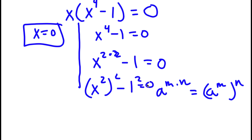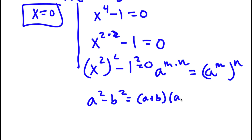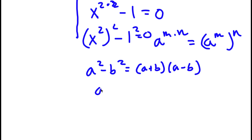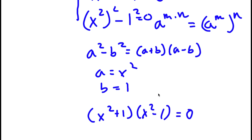Now, if I have something in the form a squared minus b squared, this is equal to a plus b times a minus b. So in this case, with x squared to the power of 2 minus 1 squared, a is equal to x squared and b is equal to 1. So I have x squared plus 1 times x squared minus 1 is equal to 0.